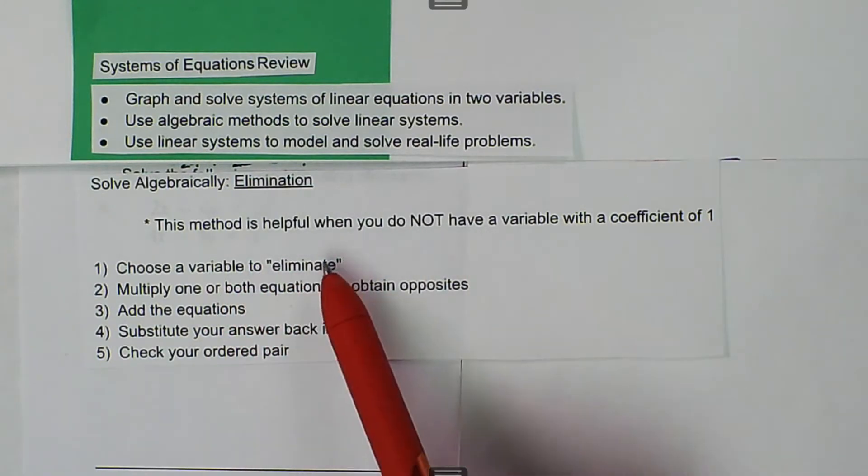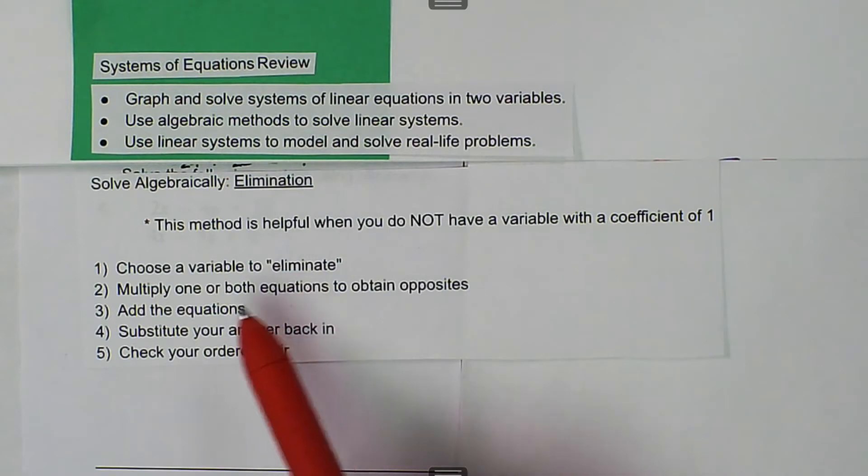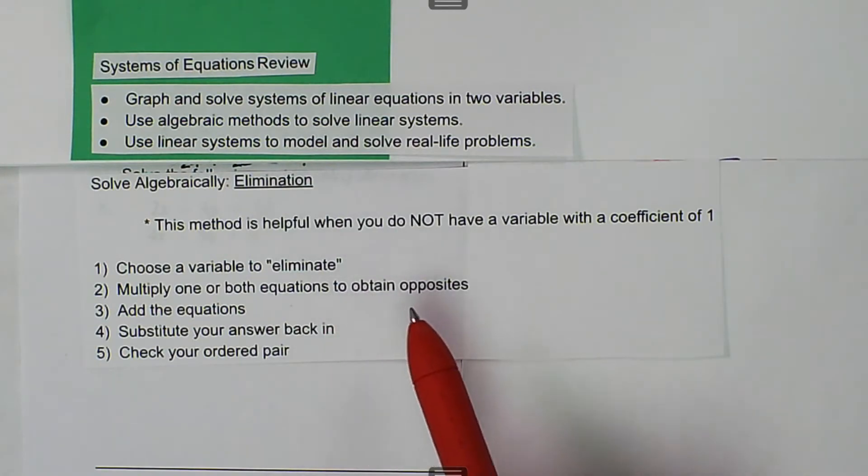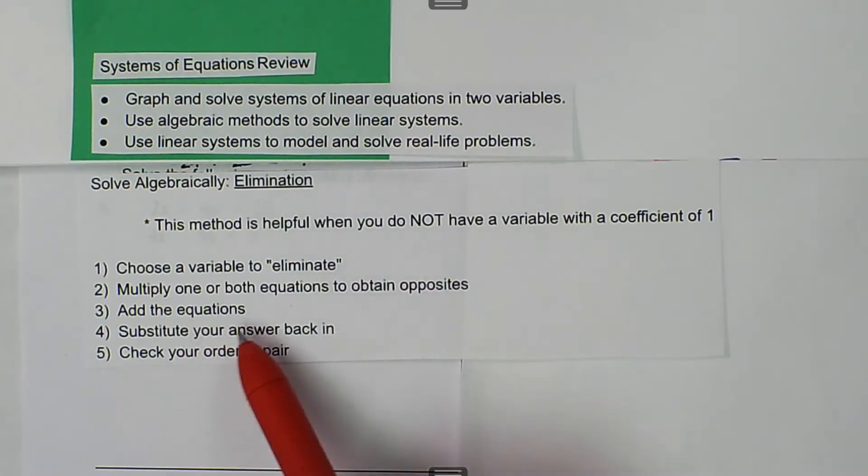So choose a variable to eliminate. That means we want to have them have the opposite coefficient in front of them. Multiply one or both equations to obtain opposites, add the equations, substitute your answer back in, and check for ordered pairs.